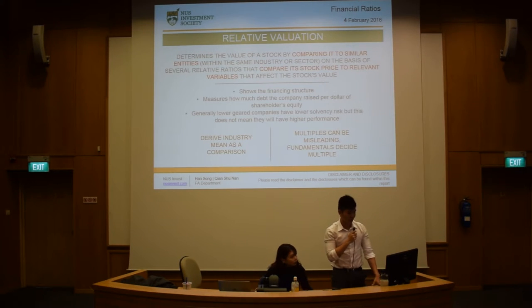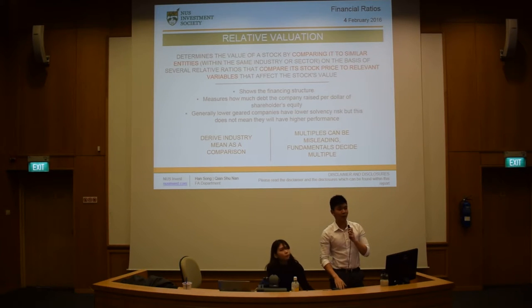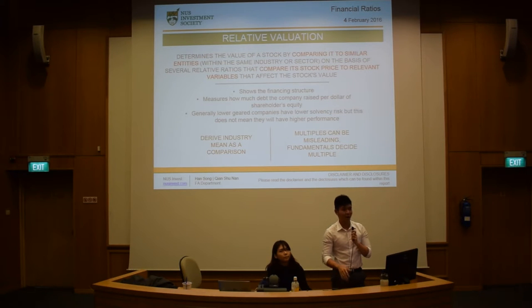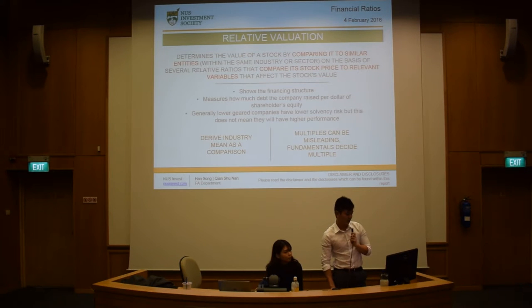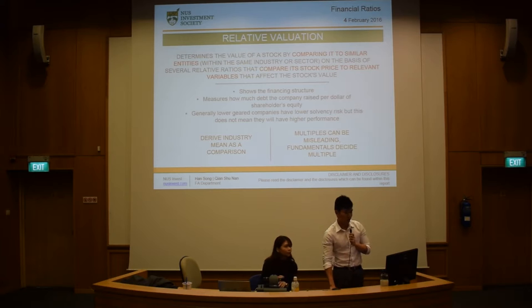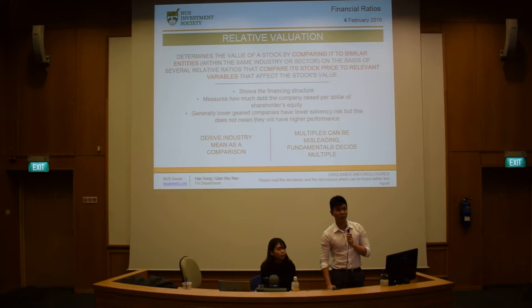Thanks, Crystal. After sharing all the different ratios, the way we use them is usually for relative valuation. Because if I tell you a stock's DE is 5, what can you make of it? You really can't. So you need to see how it compares to different comparables in the industry, based on the other ratios as well. Ratios can show your financing structure through DE, and measure how much debt the company raised per dollar of shareholders' equity. Generally, lower-debt companies have lower solvency risk, but this does not mean they will have higher performance, because they might be able to leverage more to get greater returns.